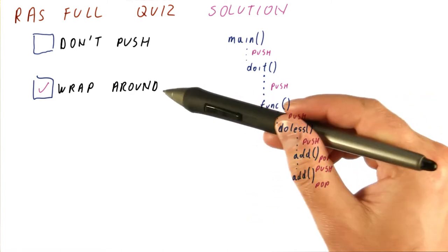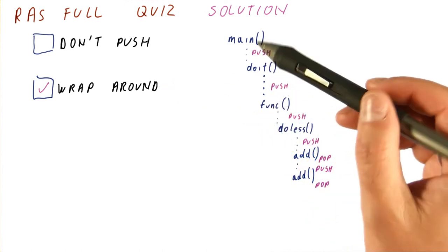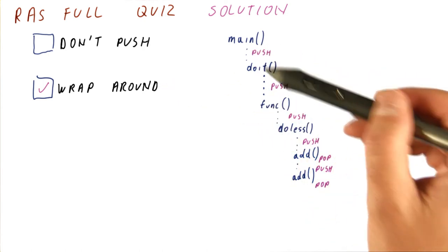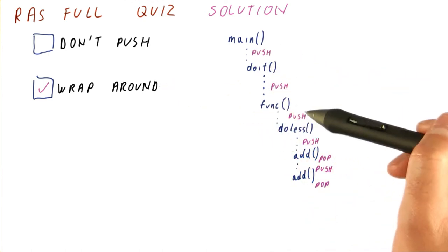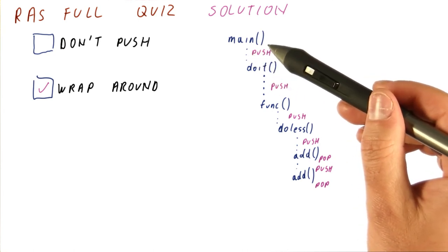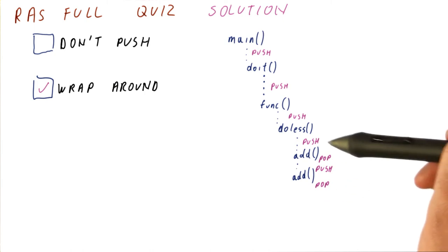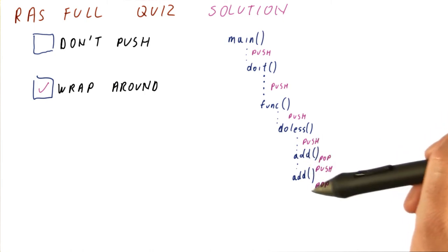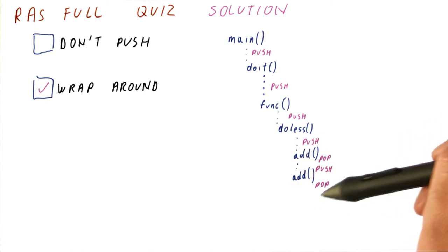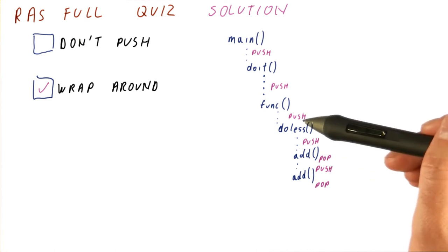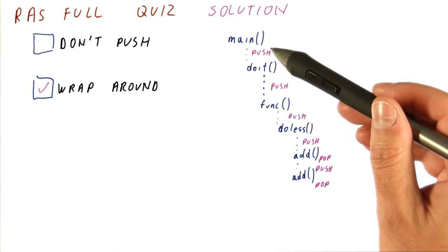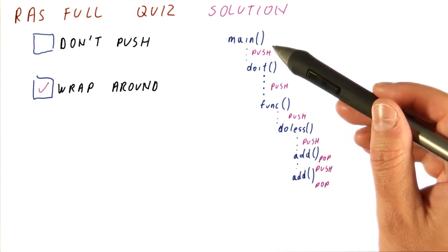In contrast, the wrap around approach is going to push this, push this, push this, thus overwriting this entry. So now what we are doing is we're basically going to be correctly predicting calls to small functions and returns, and we can have many of those in return for inaccurately predicting the final returns from large functions.